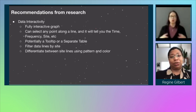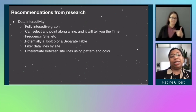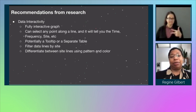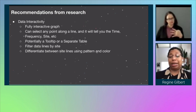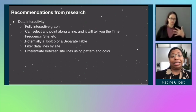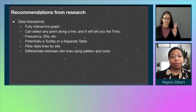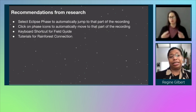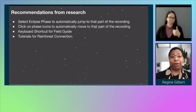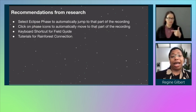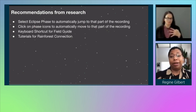Recommendations for data interactivity were to provide a fully interactive graph where a user can select any point along a line and it will tell you the time, frequency, site, etc. Potentially there should be a tooltip or a separate table. Filter data lines by site and differentiate between site lines using patterns and color. Additional recommendations are to select an eclipse phase to automatically jump to that part of the recording, click on phase icons that automatically move to that part of the recording, and add keyboard shortcuts for the field guide and tutorials for Rainforest Connection to help people figure out how to use it.